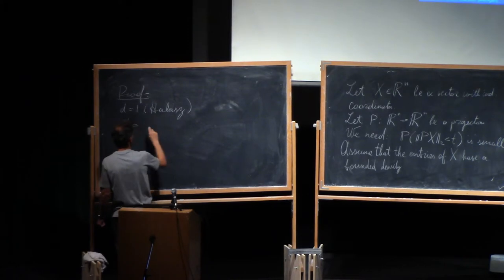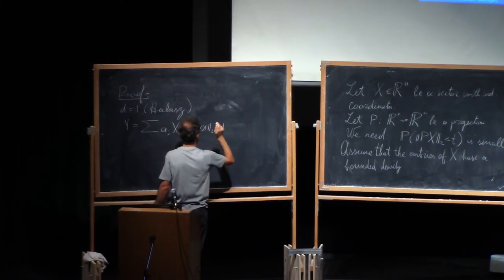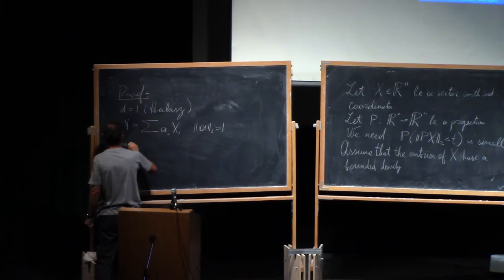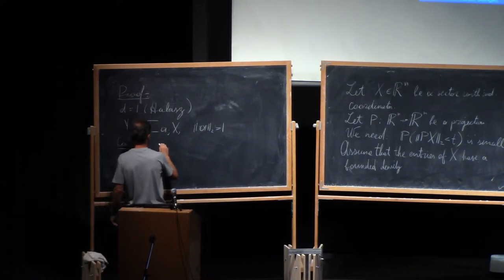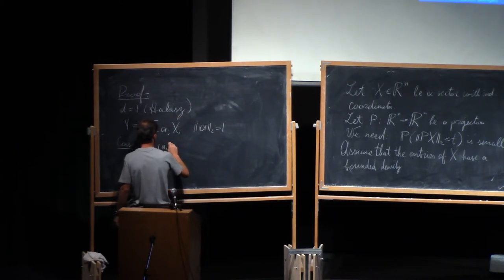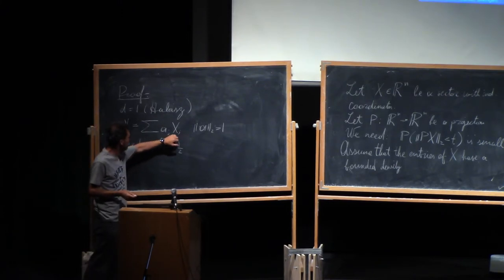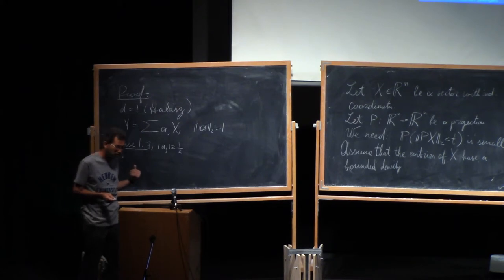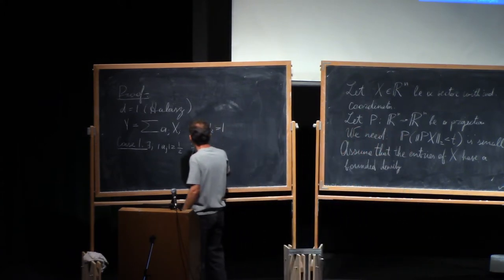What we are going to do: our random variable y, which is one-dimensional projection, is the sum a_j x_j, where the norm of a is one. We want to find the maximal density of y. Let's consider two cases. One case is trivial. If one of the coordinates of a_j, say the absolute value of a_j is greater than one-half, then this is trivial because I can condition on all other variables, and conditional density will be bounded. Then I integrate over the other random variable, and conditional density remains bounded as well.